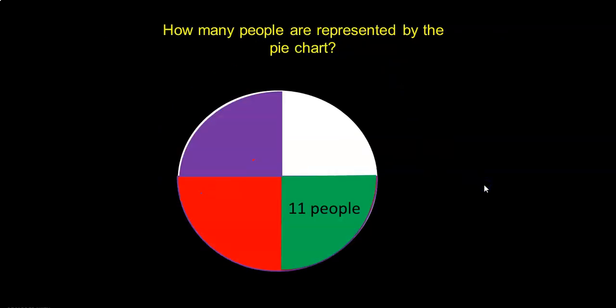How many people are represented by this pie chart? Here's a slightly different question. You need to find the total number of people. So there are four quarters. One quarter represents 11 people. So each quarter will represent 11 people. Altogether there are 44 people.